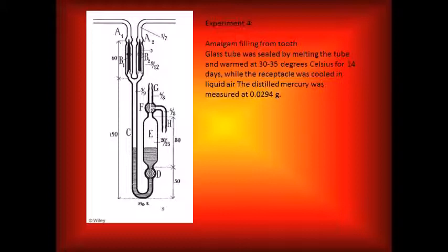The fourth experiment involved an amalgam filling that had been in a tooth for years before falling out. This sample was warmed at 30 to 35 degrees Celsius for 14 days, while the receptacle was cooled in liquid air. The distilled mercury was measured at 0.0294 grams.